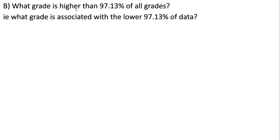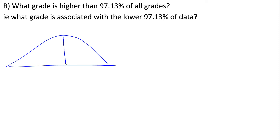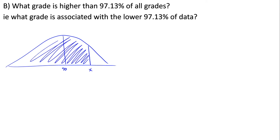Part B asks: what grade is higher than 97.13% of all grades, or what grade is associated with the lower 97.13% of data? These are two ways to word the same question. Drawing the picture: this grade is higher than more than half of the grades, so it corresponds to a positive z-score. The shaded area to the left of this score is 0.9713.